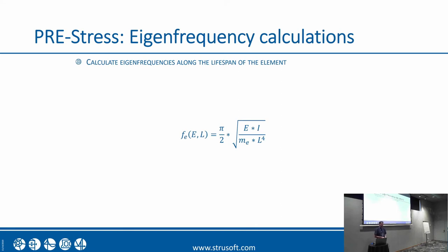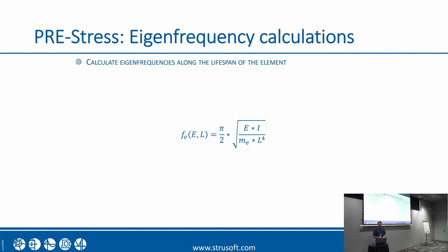Here is the most advanced formula I will show today — the eigenfrequency formula. We calculate eigenfrequencies along the lifespan of the element and for different support positions and different concrete maturities. In the factory it may have one eigenfrequency, during transport another as the concrete has hardened, and in the final stages we can see what the eigenfrequency is for the element in its finished structure.